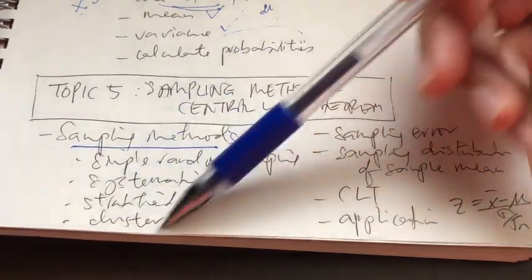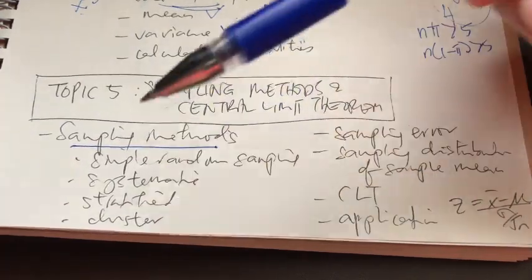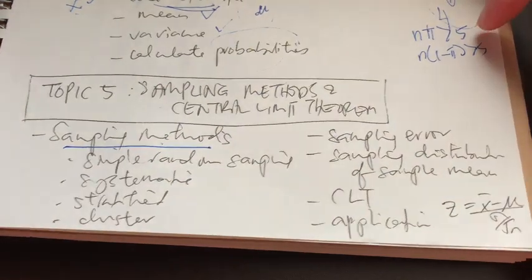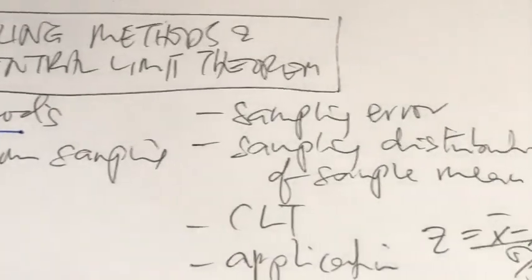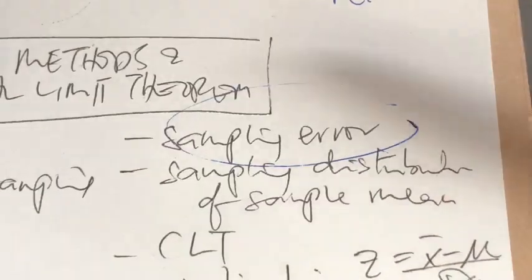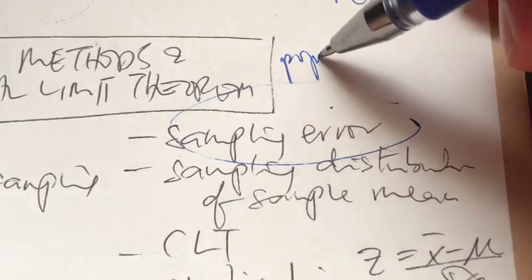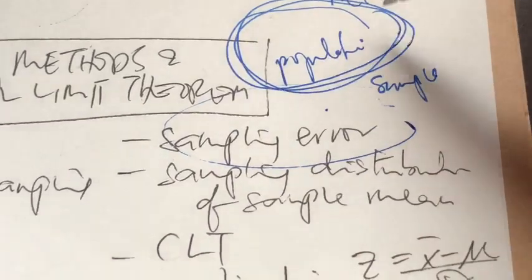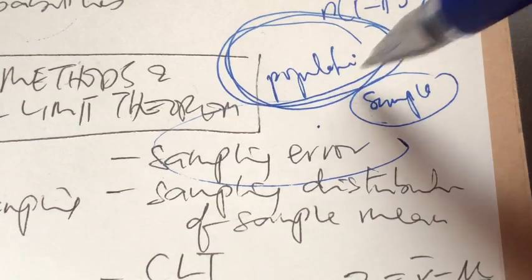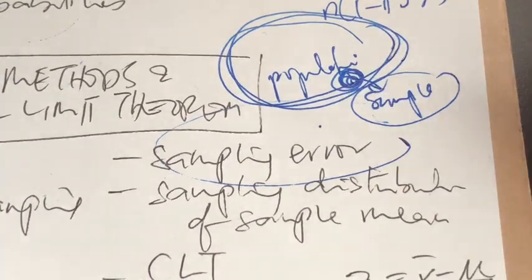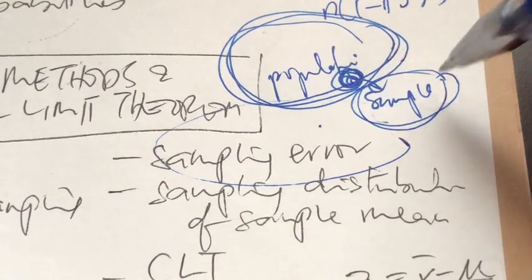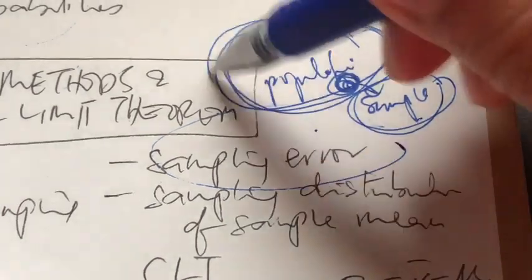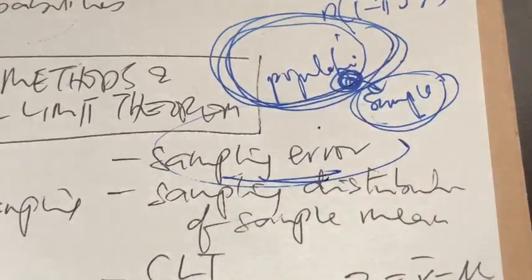Please know how to conduct each sampling method, their benefits, and their disadvantages. Besides knowing how to collect samples, you are also introduced to the concept of sampling error. There is a difference between population and sample — the population is the whole thing, while the sample is just a part of it. Whatever information we get from the sample is called the sample statistic, and there will be a difference between the sample statistic and the population parameter. That difference is called the sampling error.